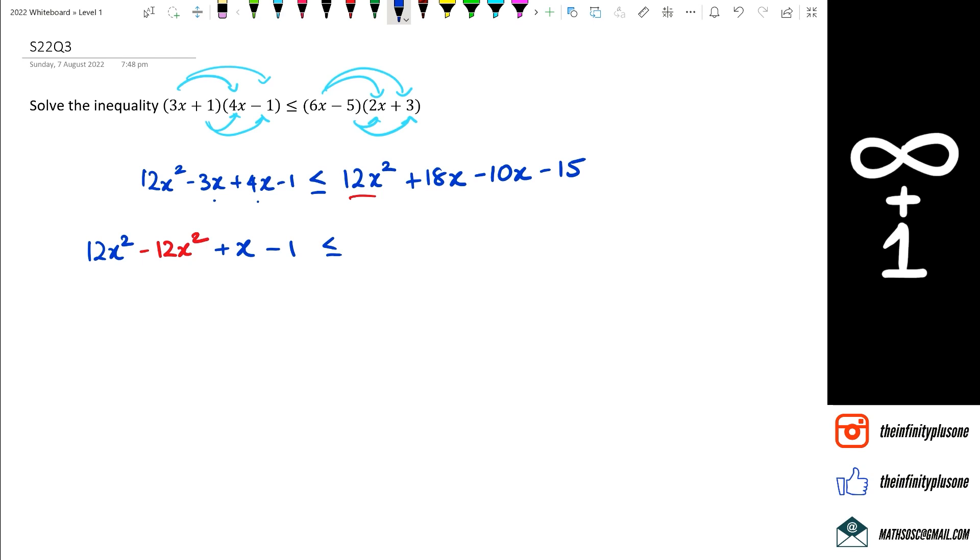Minus 1 less than or equal to 18 minus 10, which is 8x minus 15. So 12x squared and 12x squared, they disappeared. So what I've got here is x minus 1 is less than or equal to 8x minus 15.